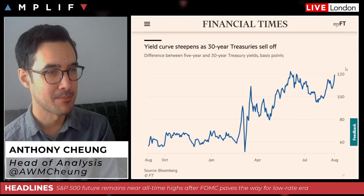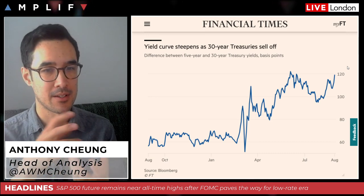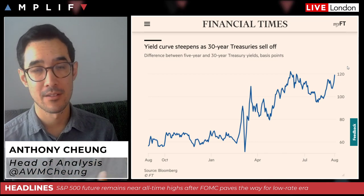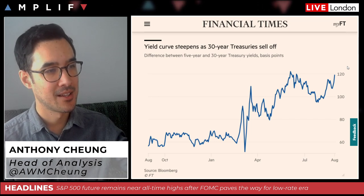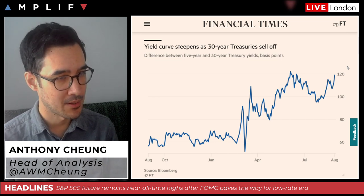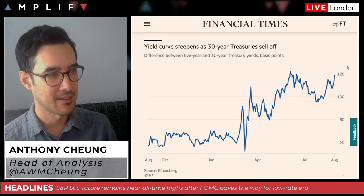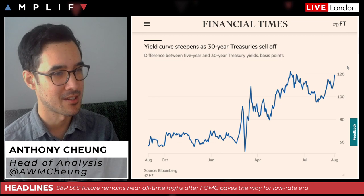The steepening of the yield curve also reflects disappointment among investors about the lack of detail from Powell about the Fed's bond-buying program. The Fed is committed to buying treasuries of all maturities at a pace of 80 billion per month, but some investors have been calling for the Fed to purchase relatively more longer-term debt to hold down yields further out. This idea of yield curve control — suppressing the yield rise in the long end — has definitely not been mentioned so far and is probably being kept in reserve should it be necessary later on.